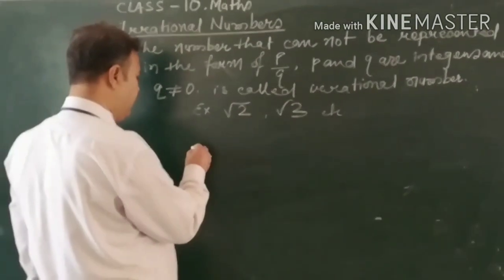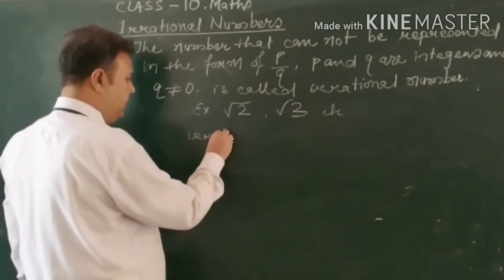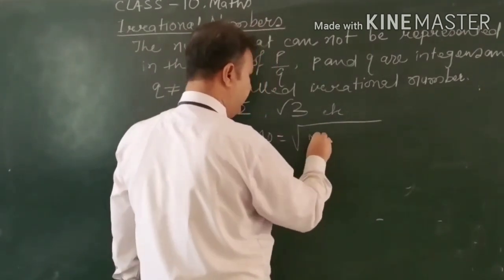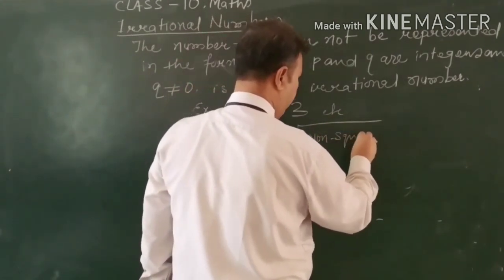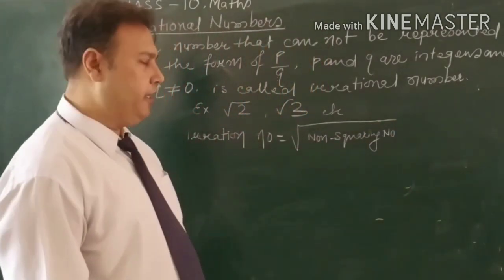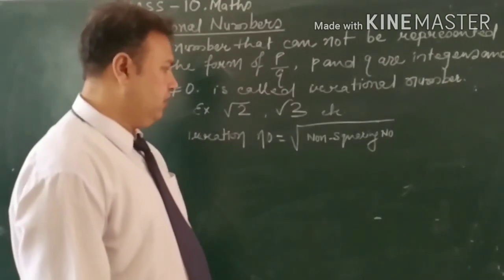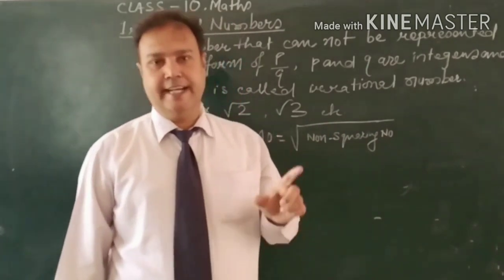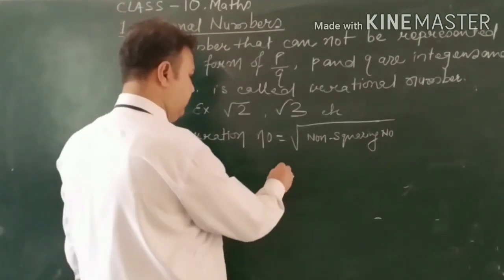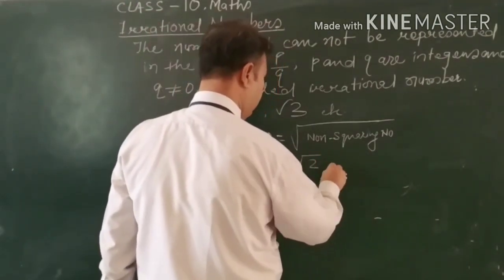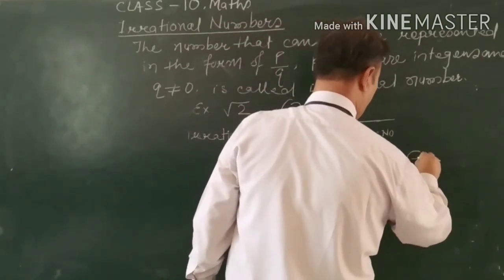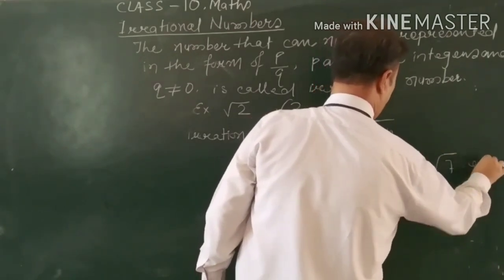So I have to choose one parameter: a rational number going to root under a non-square number. Non-square number means the number that cannot be represented in the form of a square. For example, root 2, root 3, root 5, root 6, root 7, and so on.